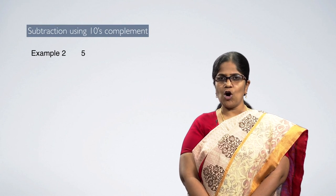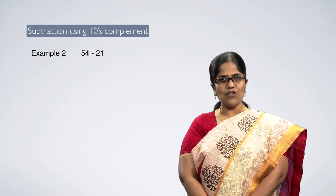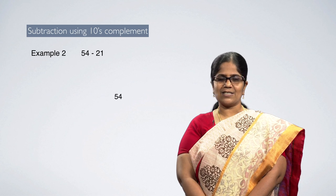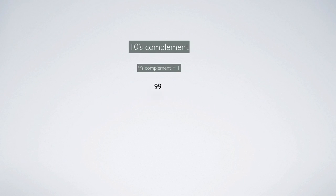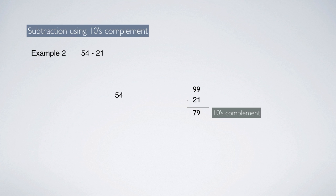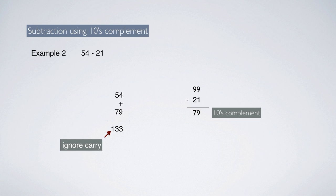Next example: 54 minus 21. The first number 54 is left as it is. For the second number 21, first take 9's complement: 99 minus 21 is 78. Then add 1 to get the 10's complement: 78 plus 1 is 79, which is the 10's complement of 21. Perform decimal addition: 54 plus 79 equals 133. We get a carry — ignore or discard it. So the answer is 33.